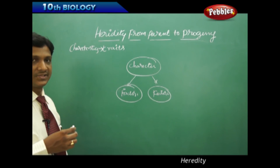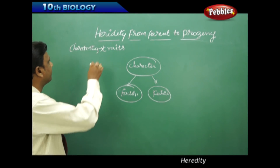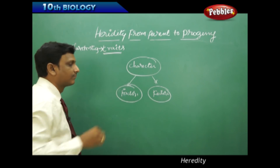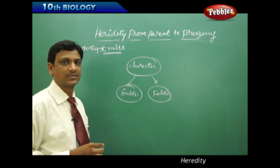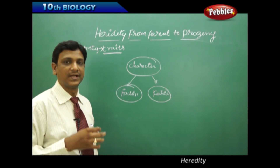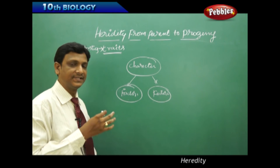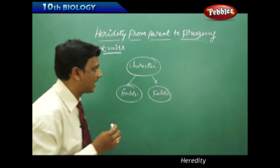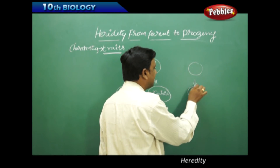By the experiments, Mendel hypothesized that every characteristic is carried as traits. Every character is expressed by two factors — there are two factors for each character. He also hypothesized how these traits are passed from one generation to another generation. In his experiments, he found that the traits are being passed through the seeds.